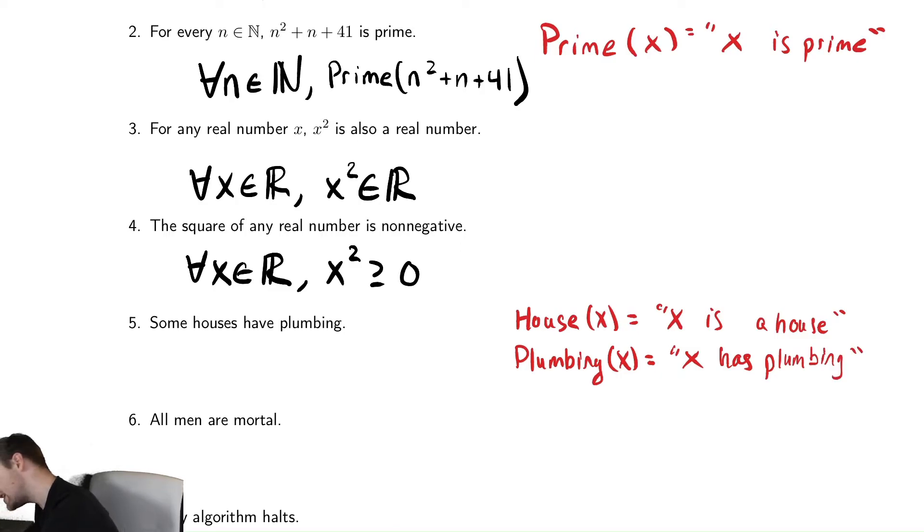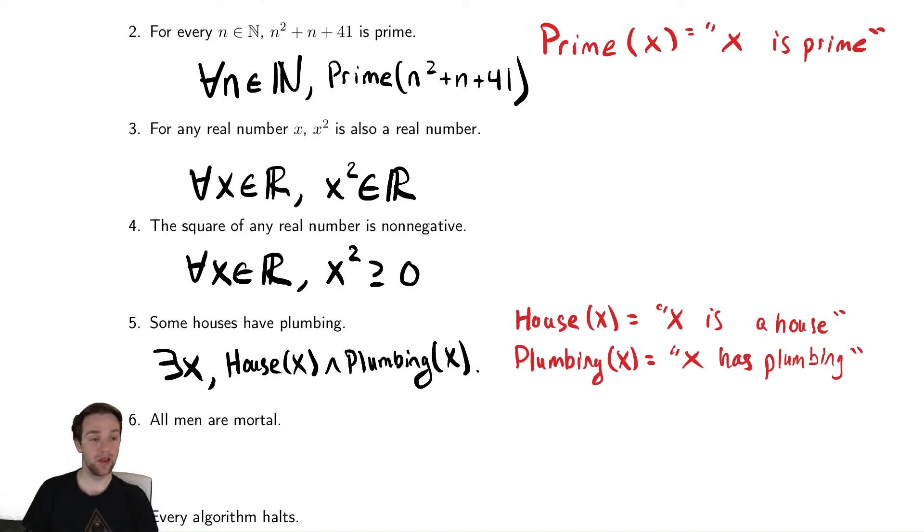And what this sentence is saying is that there is something that is a house and has plumbing. So this is a house and that thing has plumbing. So that's a different type of statement than we've seen already. It's that there is this thing that has this property. And when you have that, you're saying there exists and that is that type of thing and has that property. It's an and.